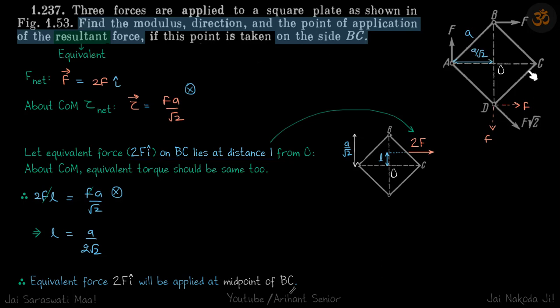We have a square plate on which we have these three forces: F, F root 2, and F. We need to find the equivalent force if the point of application of that force is on the side BC. The equivalent force, wherever we are applying on the side BC, should yield the same net force on the plate.